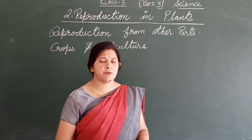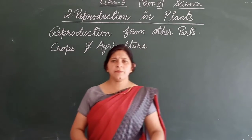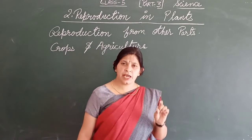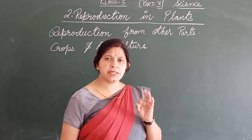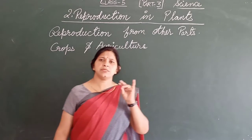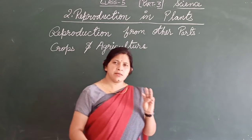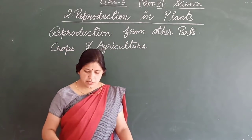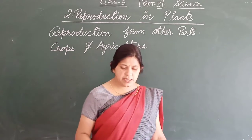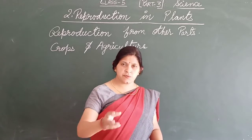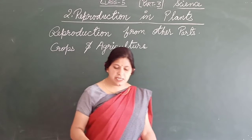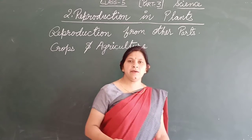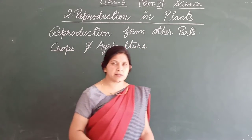Reproduction from other parts. All of the major parts of the germinating plant are leaves, seed, and stem. These are three things. And leaves also. These parts of the plant may be root, stem, or leaves of the parent plant.